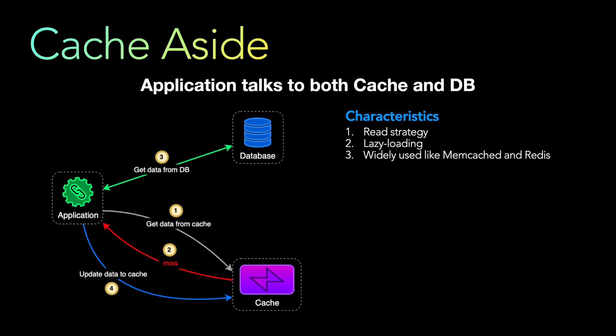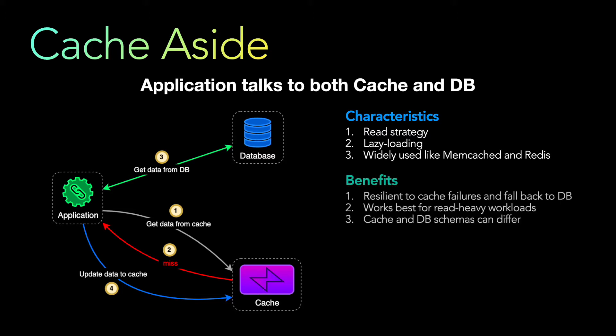Some characteristics of cache-aside: it is a read strategy, it is a lazy loading strategy, and it is quite widely used in Memcache and Redis architectures. Some benefits are that it is resilient to cache failures — if the data is not present in the cache you can always read it from the database. This works for read-heavy workloads and the cache and database schemas can differ.